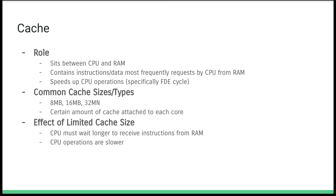The cache sits between the CPU and the RAM and contains instructions most frequently requested by the CPU from RAM, speeding up CPU operations — meaning more FDE cycles per second. Cache sizes vary by type: 8, 16, or 32 megabytes, and generally a certain amount of cache is attached to each core. If you have a limited or nonexistent cache, the CPU must wait longer to receive instructions from RAM, making CPU operations slower overall.